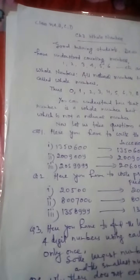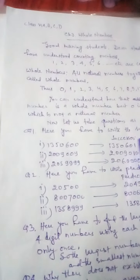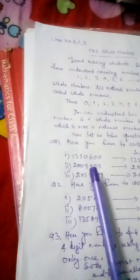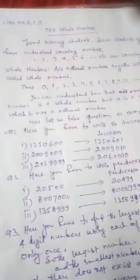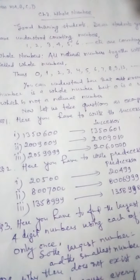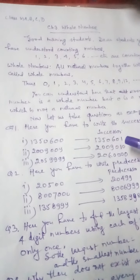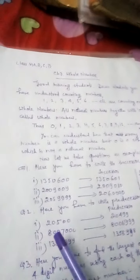Now let us take some questions as examples from 3A. Here you have to write the successor. Successor of, suppose, 13 lakh 50,600. So its successor means a number which is one more than the given number, so it will be 13 lakh 50,601.